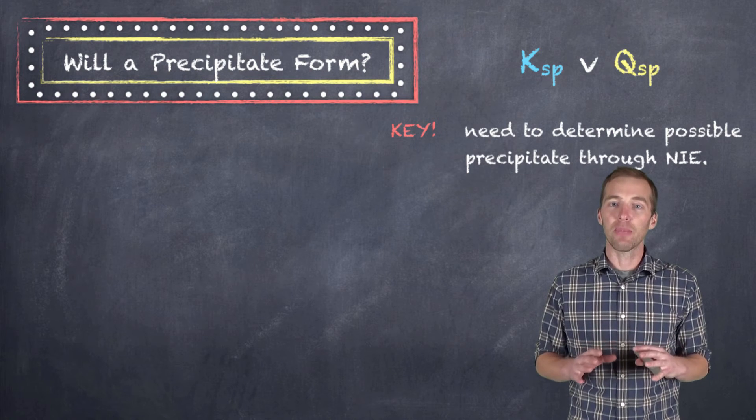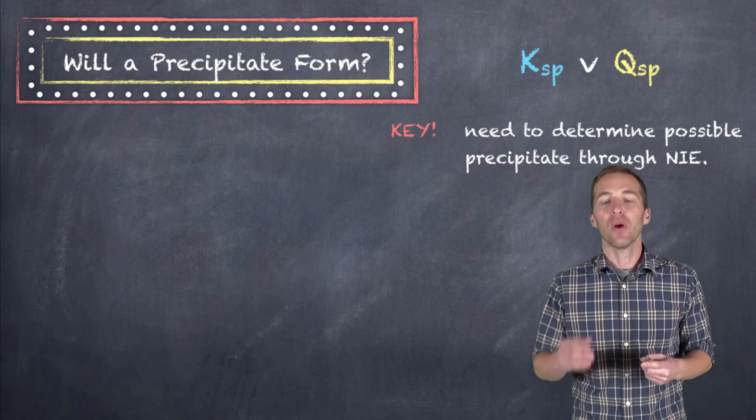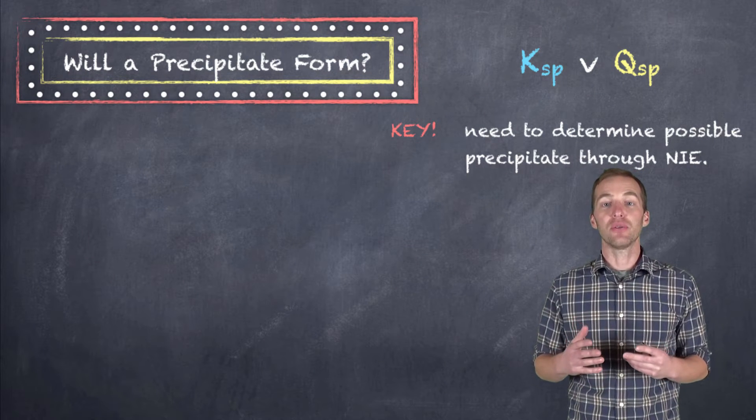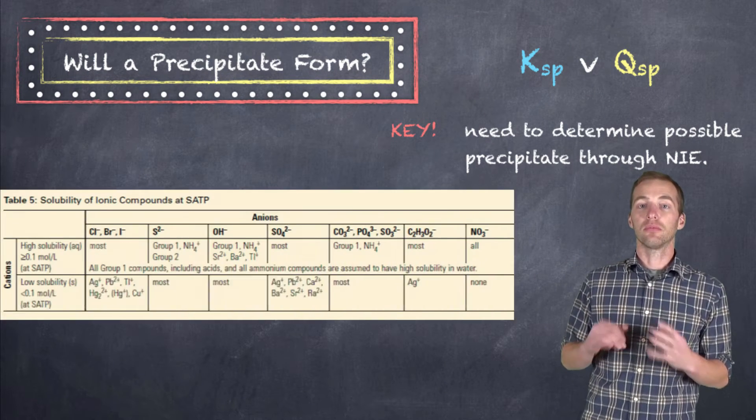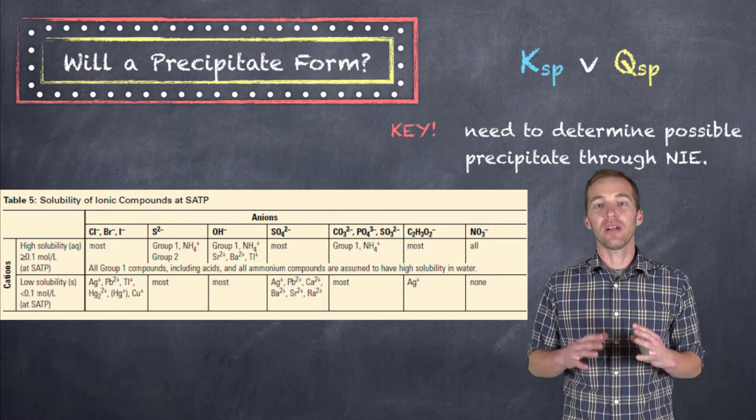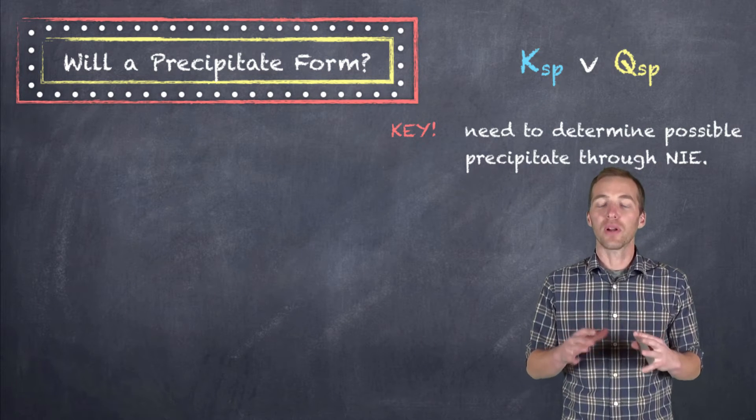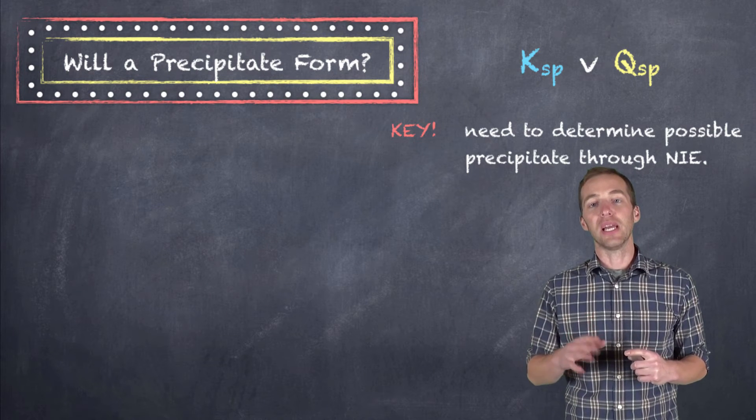And so we have to use our old friend here, the solubility chart in order to figure out which one of our substances is going to form the solid precipitate.